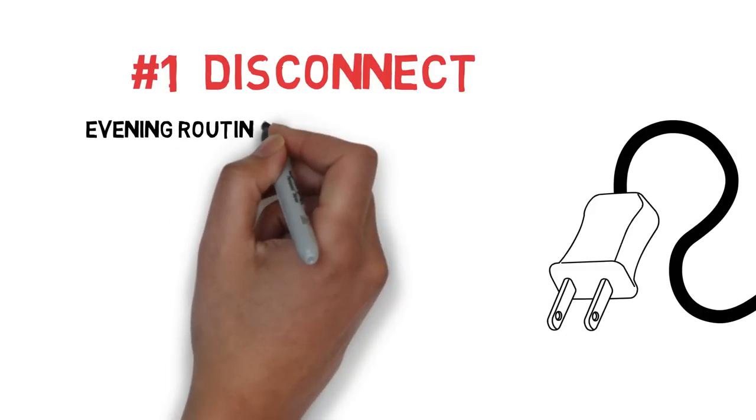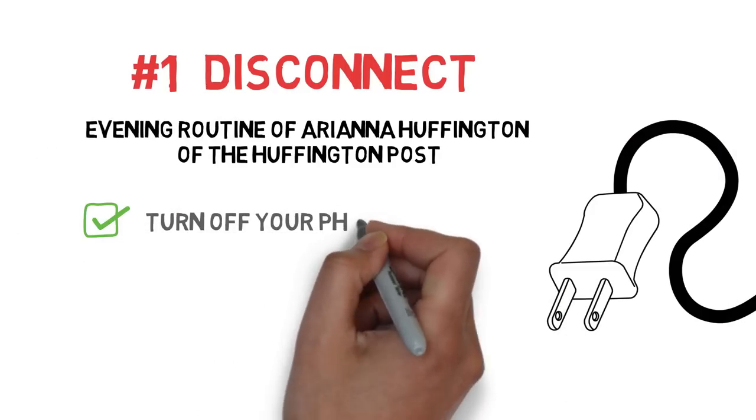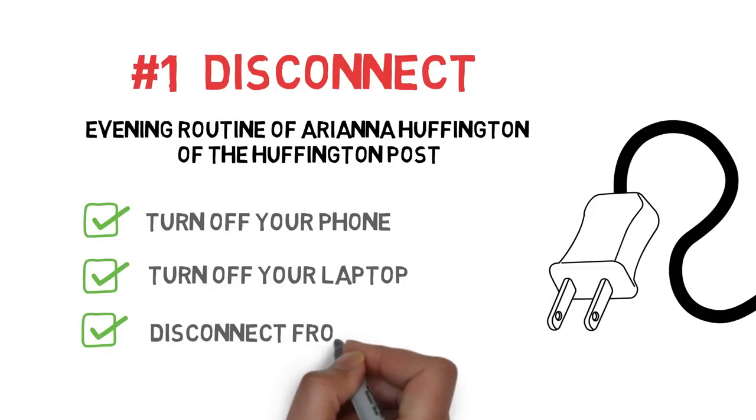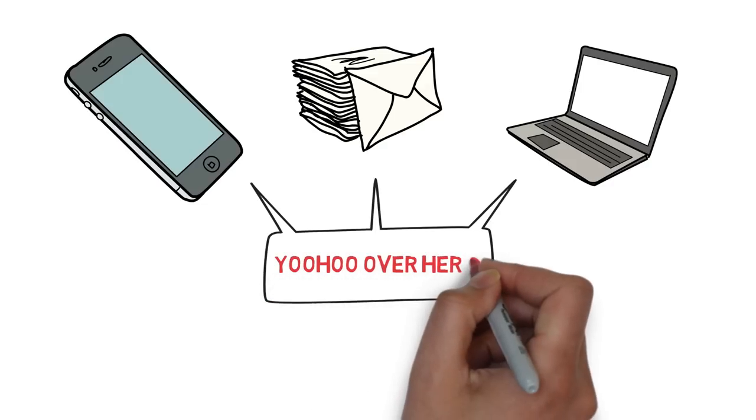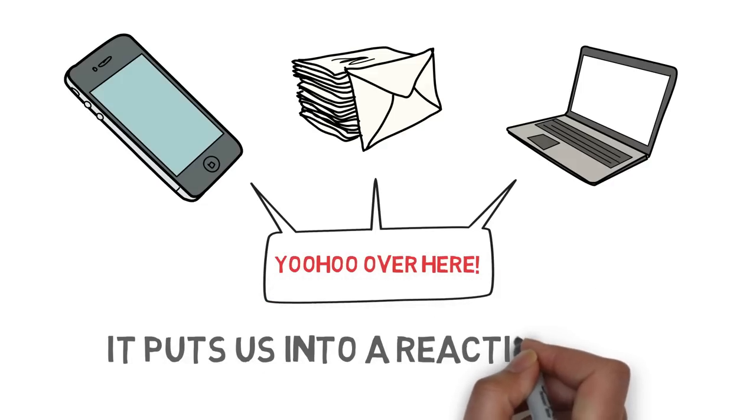The first point is disconnect. This is a habit of Arianna Huffington. She turns off her mobile, laptop, and disconnects from the world. Why? Because these devices are often putting us into a reactive state whereby we're reacting back to and replying back to emails.